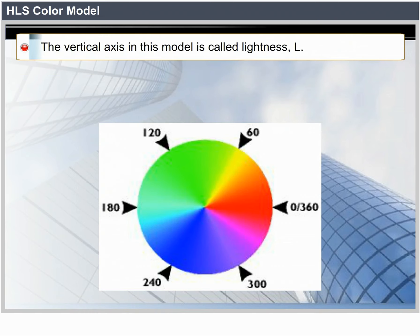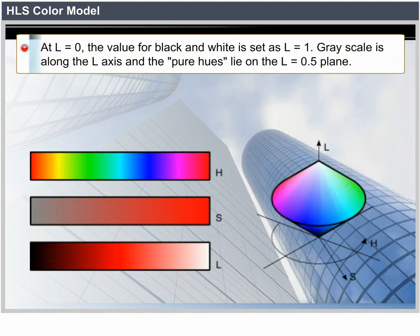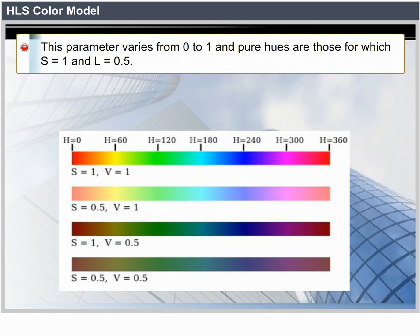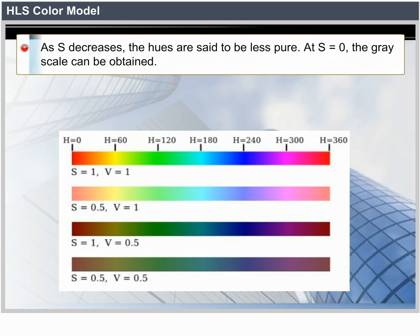The vertical axis in this model is called Lightness, or L. At L equals 0 we have black, and white is at L equals 1. Grayscale is along the L axis, and the pure hues lie on the L equals 0.5 plane. Saturation parameter S specifies the relative purity of a color. S varies from 0 to 1; pure hues are those for which S equals 1 and L equals 0.5. As S decreases, the hues are said to be less pure. At S equals 0, we have the grayscale.